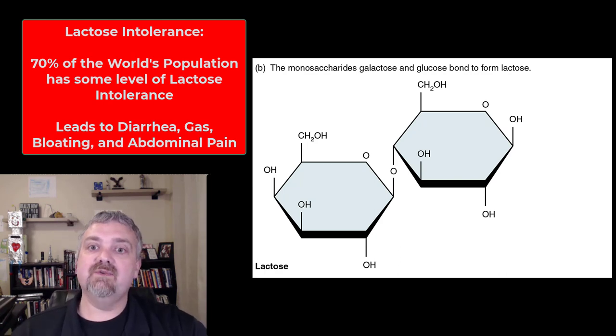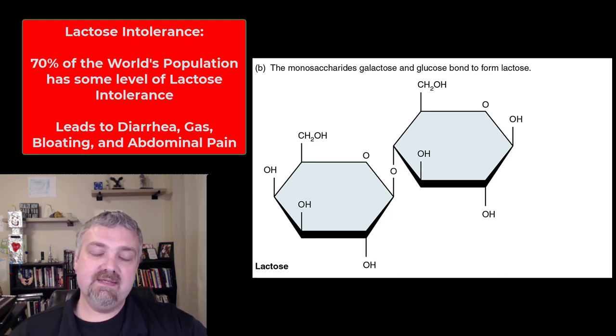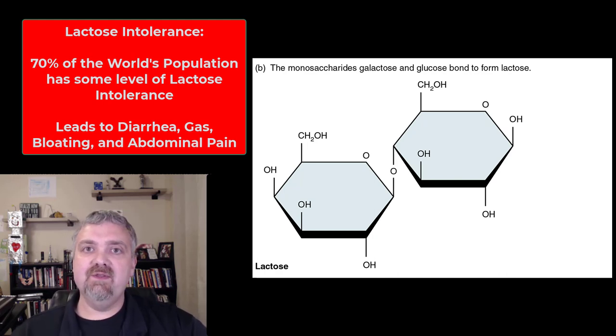For most of human history, no one would have consumed lactose except for breastfed babies. As far as your chances of being lactose intolerant, it really depends on where your genes are from. If your ancestors were herder gatherers and have been consuming dairy products for a long time, chances are you are not lactose intolerant. If your genes come from a part of the world where dairy products have not been a big part of the diet, you're much more likely to be lactose intolerant. That is lactose. And the enzyme lactase is what breaks it down.